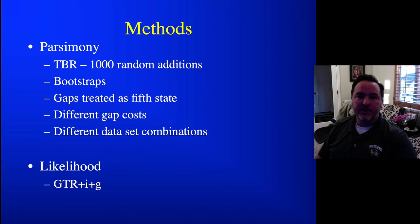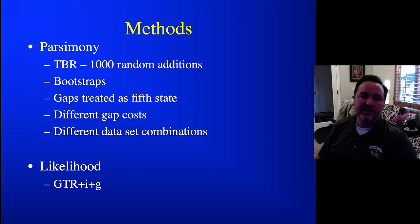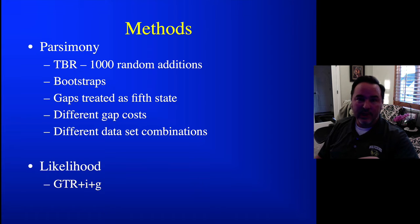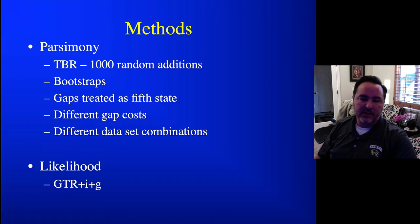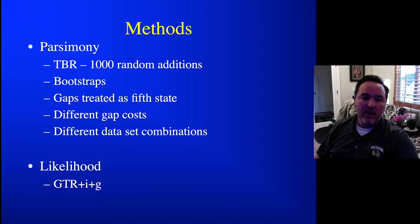The methods I used were parsimony and likelihood. Within parsimony, I did TBR with a thousand random additions, ran bootstrap analyses, treated gaps as a fifth-state character, and also looked at different gap costs during alignment and different dataset combinations — for example, analyzing 18S by itself or together with 28S. For likelihood, after running a model test, GTR plus I plus G was determined to be the best model, and so that's what we used.